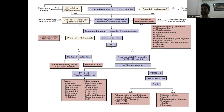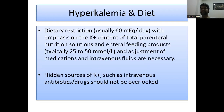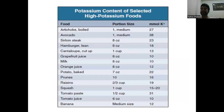The four treatment categories for hyperkalemia are: first, antagonism of the cardiac effect using calcium gluconate; second, rapid redistribution of potassium into cells; third, removal of potassium from the body; and fourth, treatment of the underlying cause. Dietary restriction is very important — typically less than 60 millimoles per day. Emphasize the potassium content of total parenteral nutrition solutions and enteral feeding products, typically 25 to 50 millimoles. Adjust intravenous fluids accordingly and do not overlook hidden potassium sources such as intravenous antibiotics.